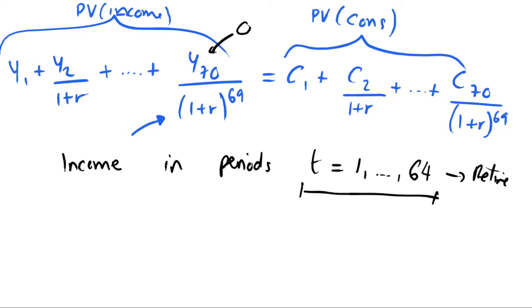Now if we think about what our consumption should be, what would happen if we just consume in each period what we earn in each period, so our consumption in time period t is equal to our income in period t? Well, that means once we reach time period 64 we have exhausted all of our income.